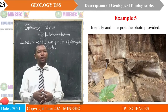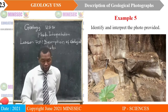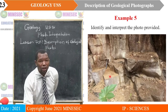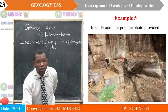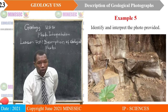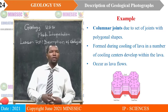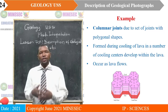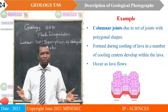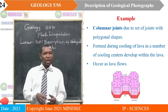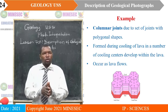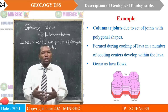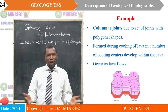Example five: identify and interpret the photo provided. If you look at this photo, you realize these are columns — you can visualize a site with different rock pillars. So that photo shows columnar joints, due to a set of joints with polygonal shapes that you can measure. They are formed during cooling of lava in a number of cooling directions or cooling centers which develop within the lava, and they occur as lava flows.